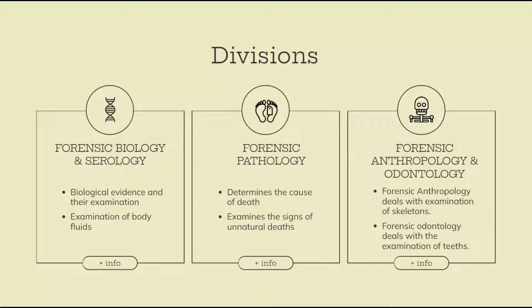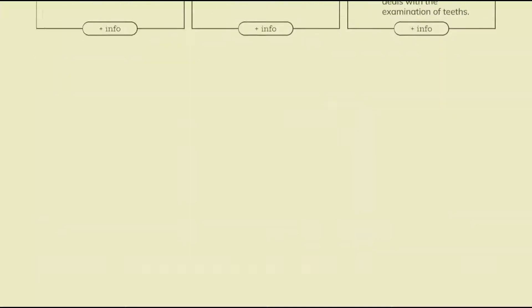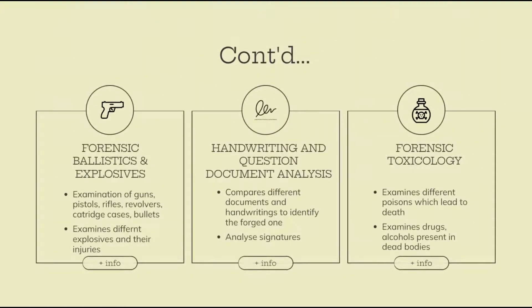Forensic Anthropology and Odontology: when investigators find any skeleton, it is examined by forensic anthropologists who provide information about the gender, reconstruct the face if possible, and help in identification of the victim. Teeth also help in personal identification from bite marks. Forensic Ballistics and Explosives examines bullet injuries, different bullets, cartridges, revolvers, pistols, and rifles used in crime, as well as explosives retrieved from crime scenes or terrorists.